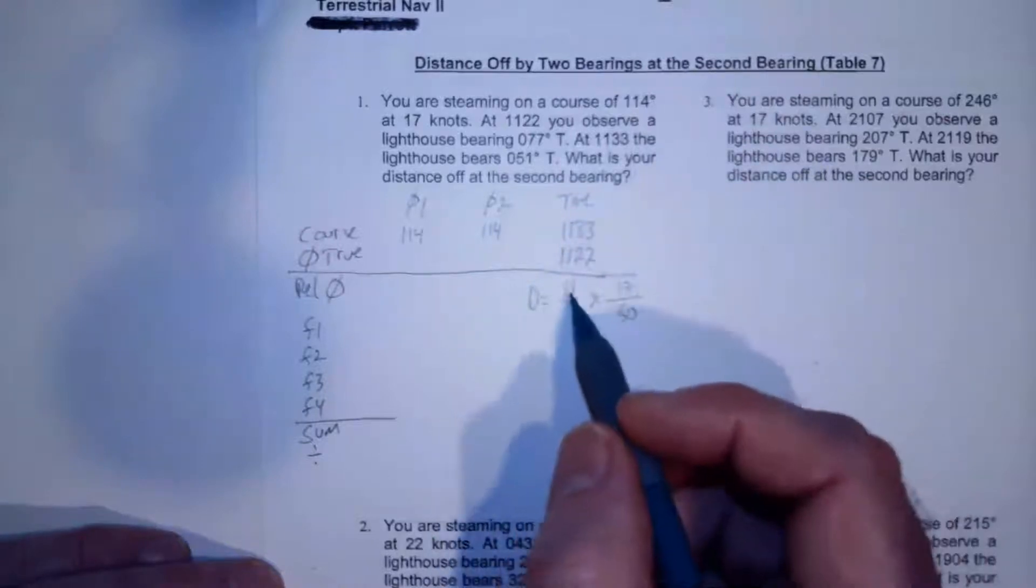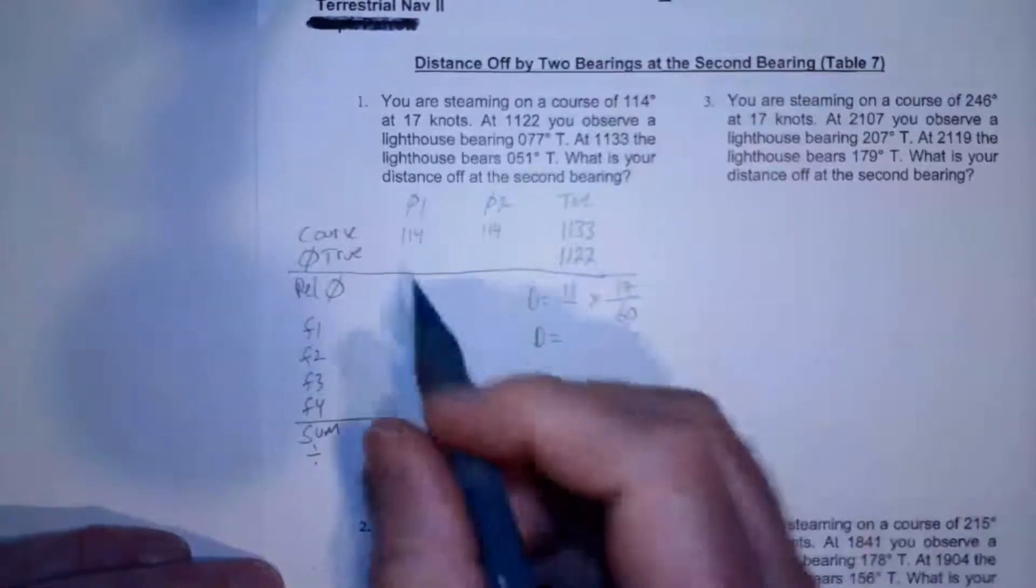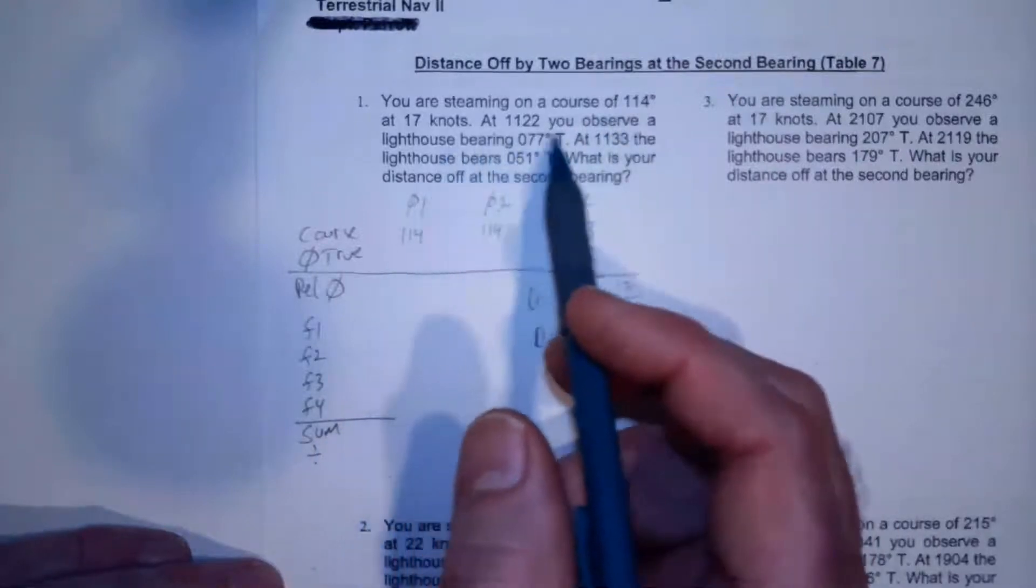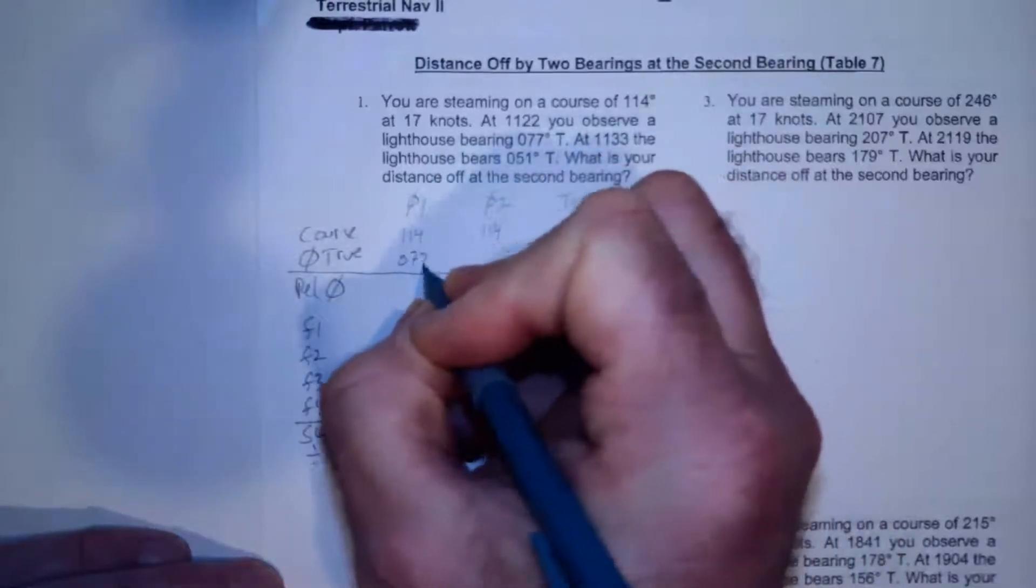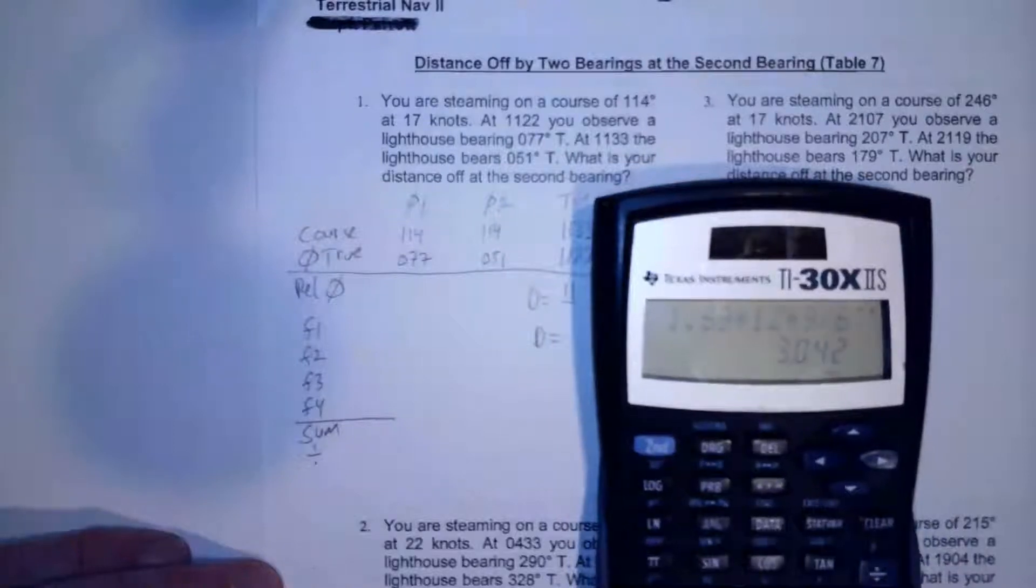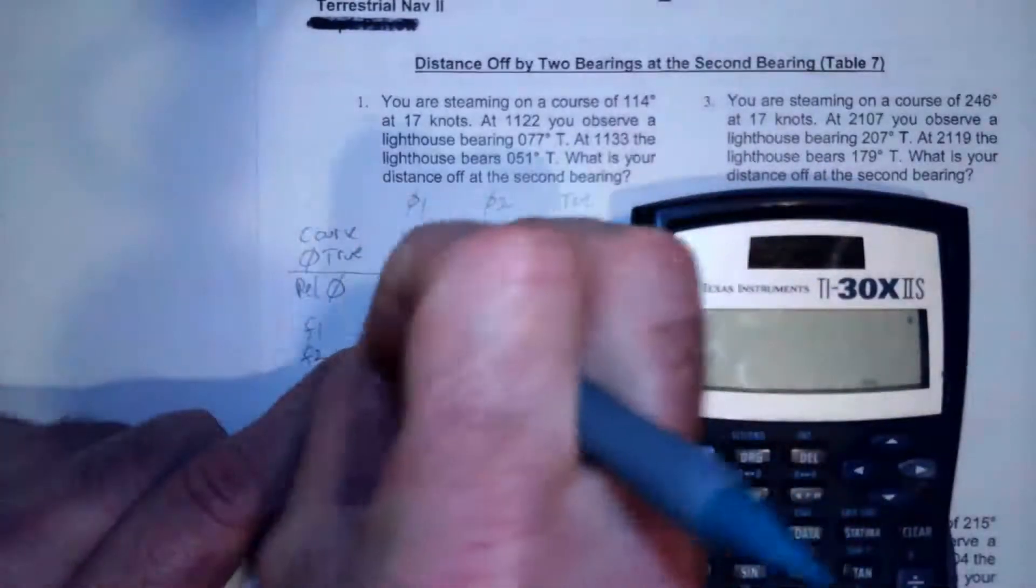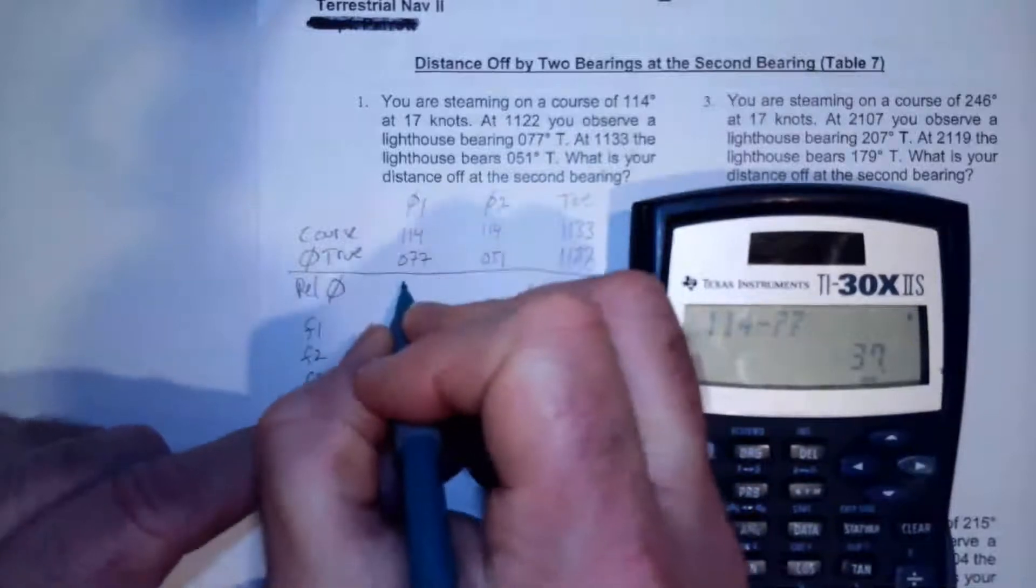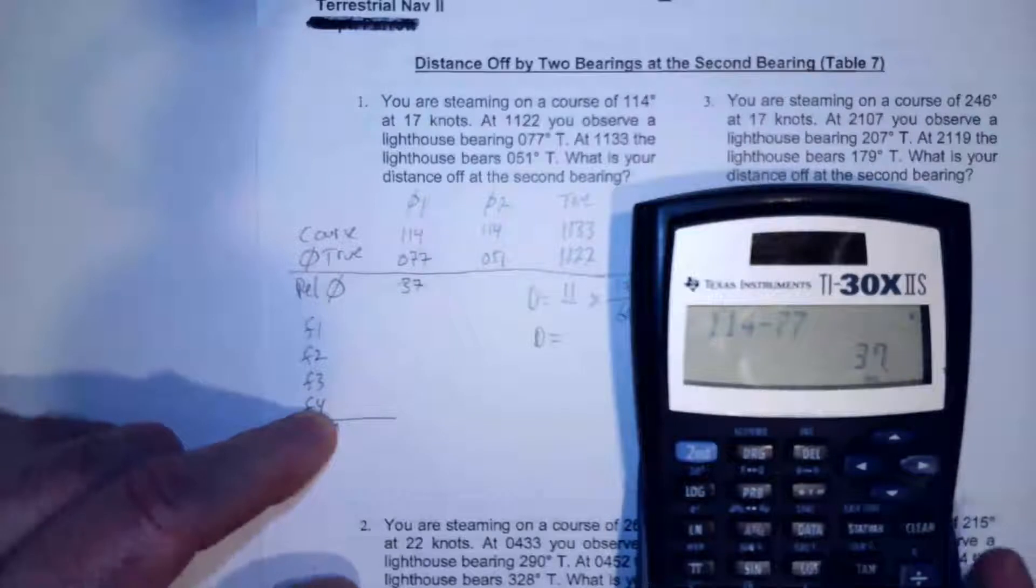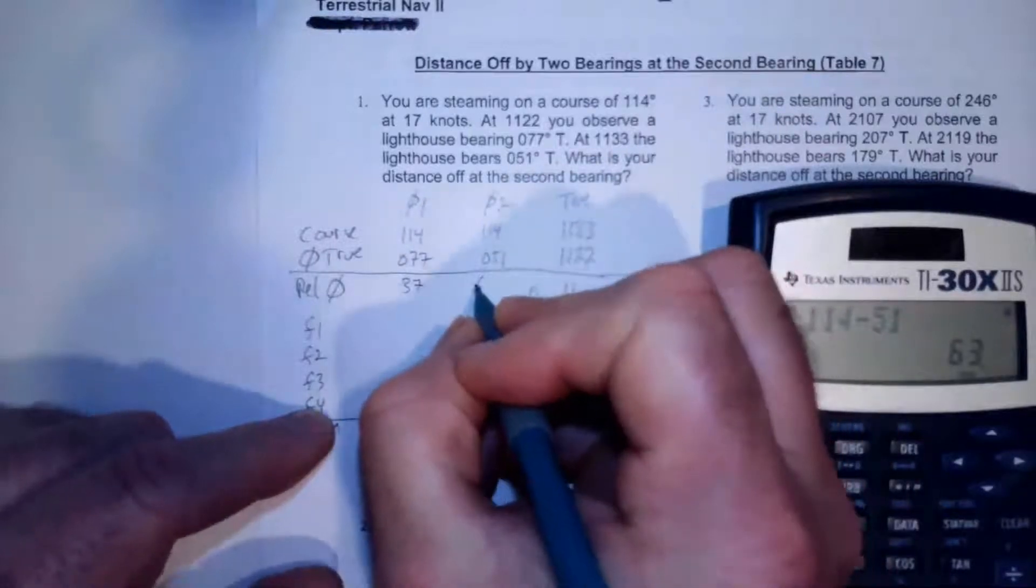Now my distance, I can calculate by 11 minutes times 17 over 60, and we'll get to that in just a minute. So I got 114, my true bearing, you observe a lighthouse bearing 077, that was the first bearing, and then the next one is 051. Now I got to do a little bit of calculator action here. I'm going to take the true course and the true bearing, and I'm going to convert them into a relative bearing by just doing a little subtraction. So 114 minus 77, and that gives me 37. That's 37 degrees off the bow. And then 114 minus 51, and that gives me 63 degrees off the bow.